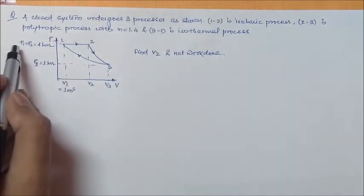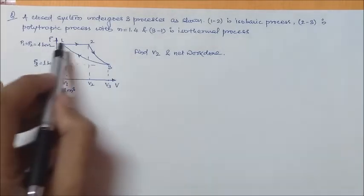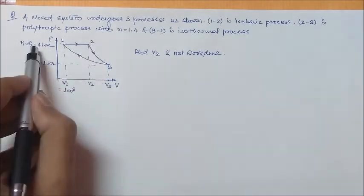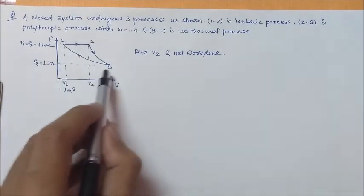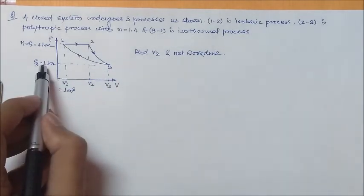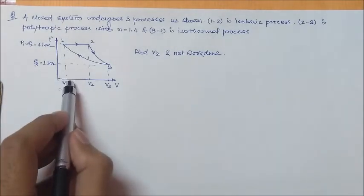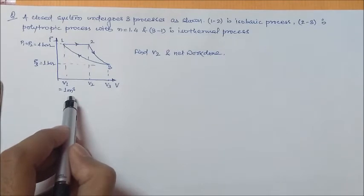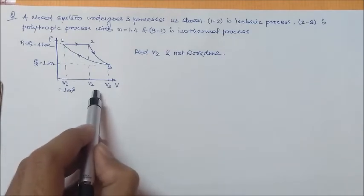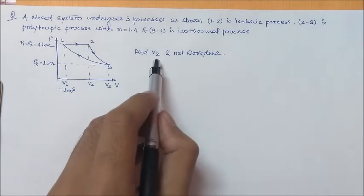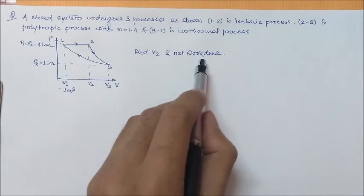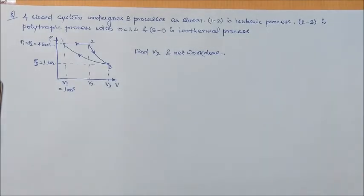The question also says that the pressure at state 1 and state 2 is equal to 4 bar, and the pressure at state 3 is 1 bar. The volume at state 1 is 1 meter cube and the other volumes are unknown. The question wants us to find V2 and the net work done by the system.